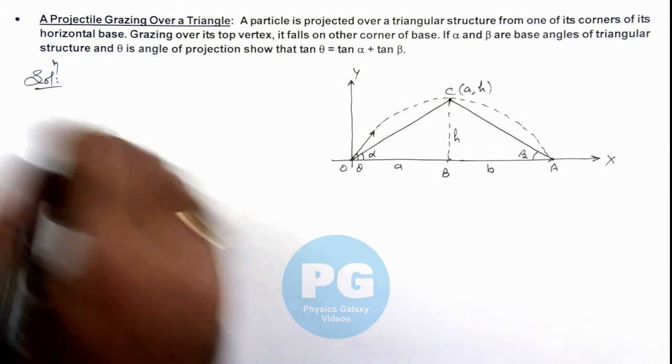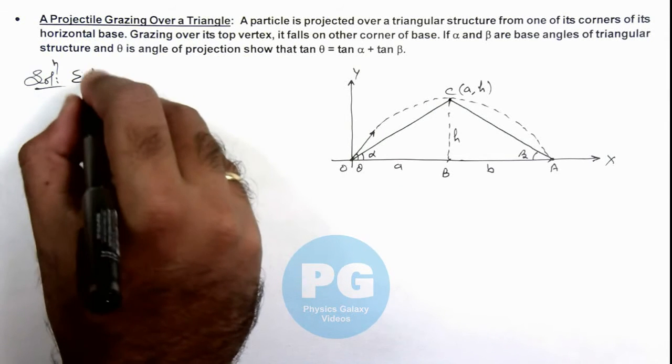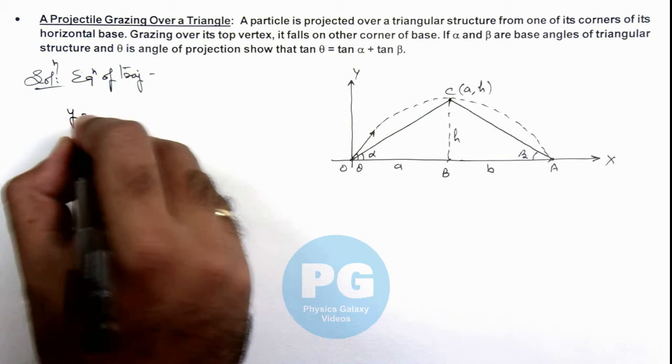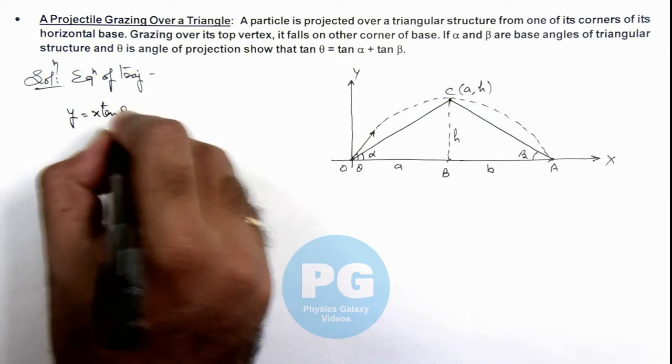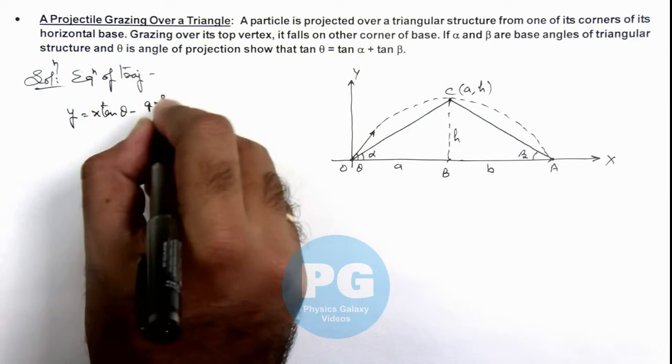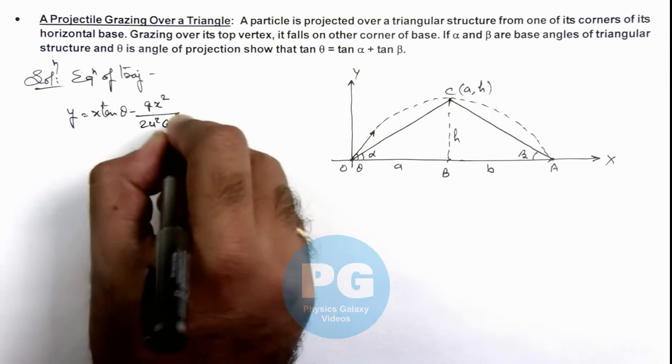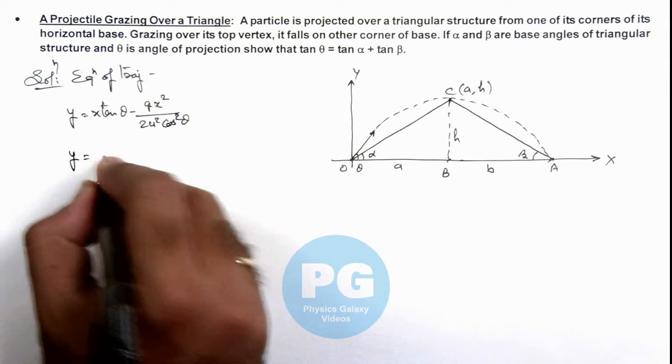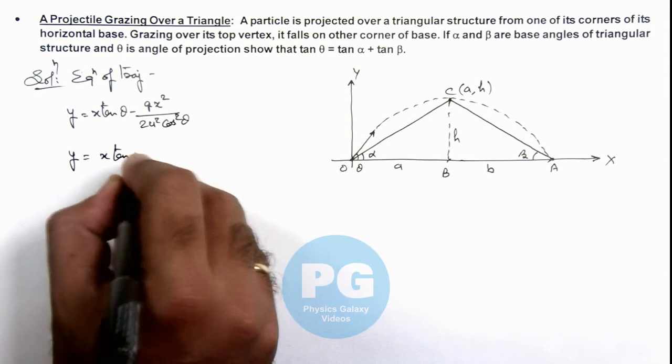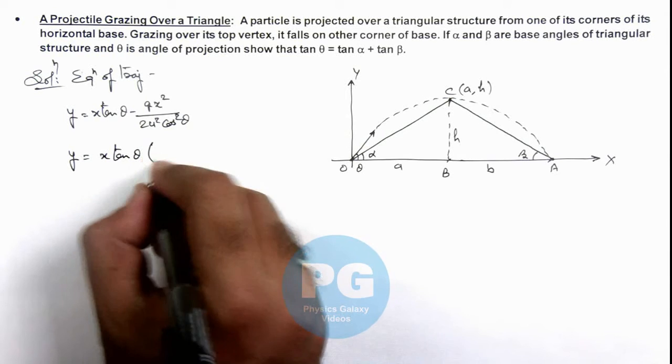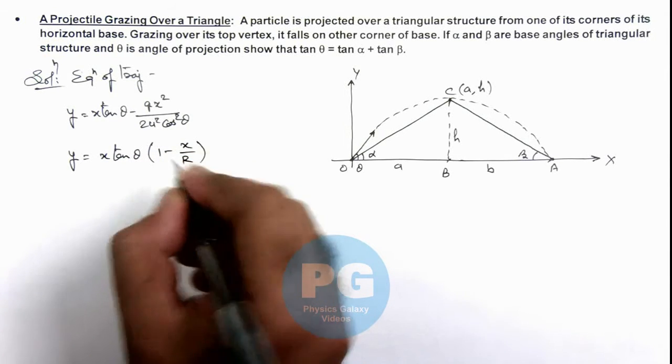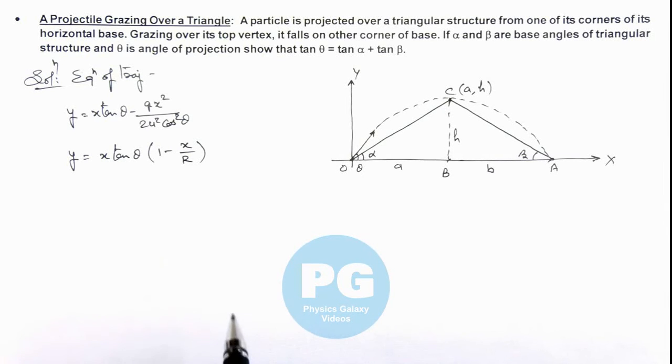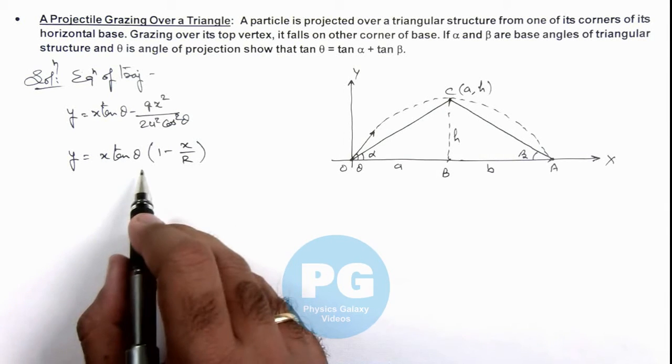For this trajectory we can write the equation of trajectory of particle is y equals x tan theta minus g x squared by 2 u squared cos squared theta. We can simplify it, taking x tan theta common, so this can be written as x tan theta multiplied by 1 minus x by R. This expression we already discussed in one of the applications of projectile earlier.